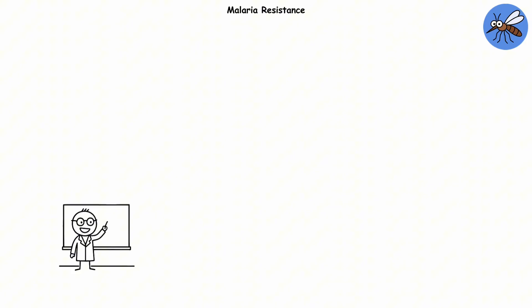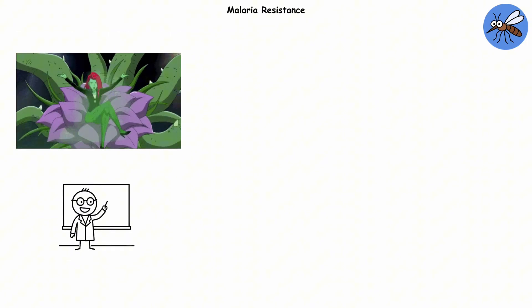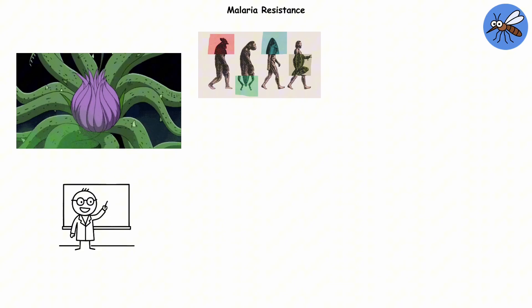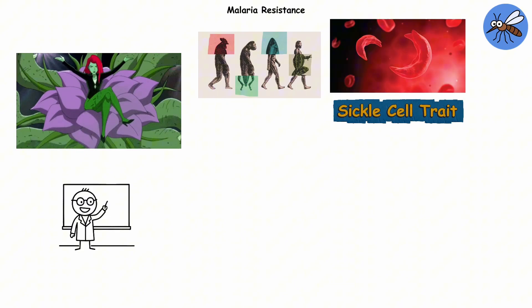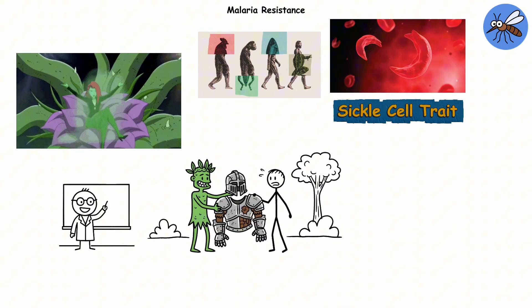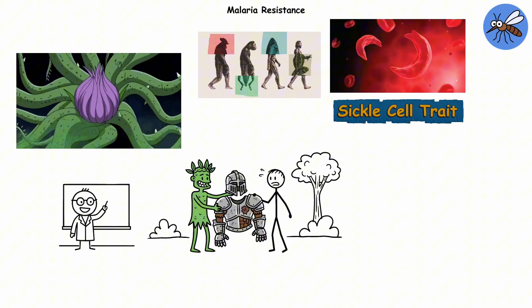Malaria resistance. You know how in movies or video games, some characters have a built-in resistance to poison? Well, evolution did the same thing with the sickle cell trait. It's nature's way of giving some people armor against one of history's deadliest enemies, malaria.